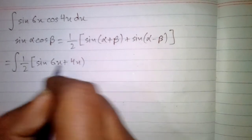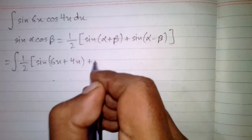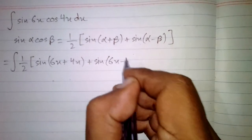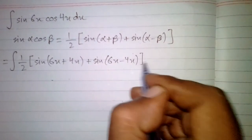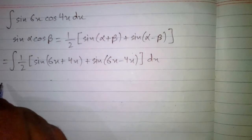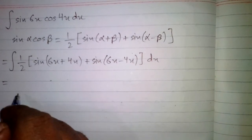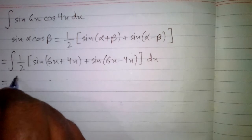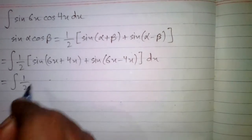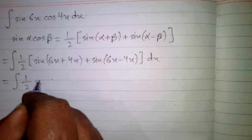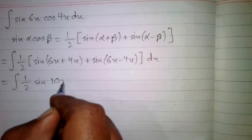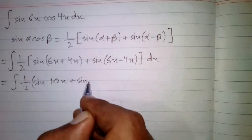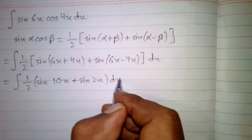Applying this formula on sin 6x cos 4x, we get 1 upon 2 times sin(6x plus 4x) plus sin(6x minus 4x) dx. After simplification, this becomes the integral of 1 upon 2 times sin 10x plus sin 2x dx.